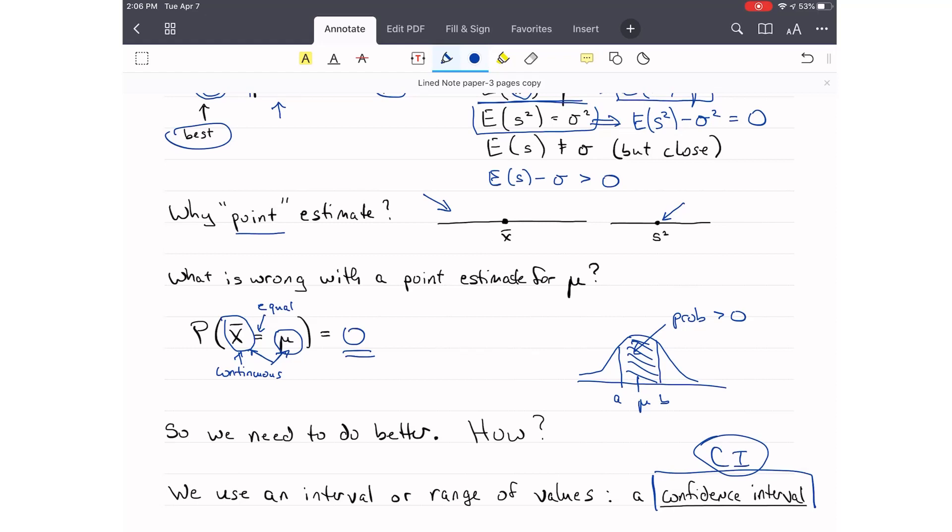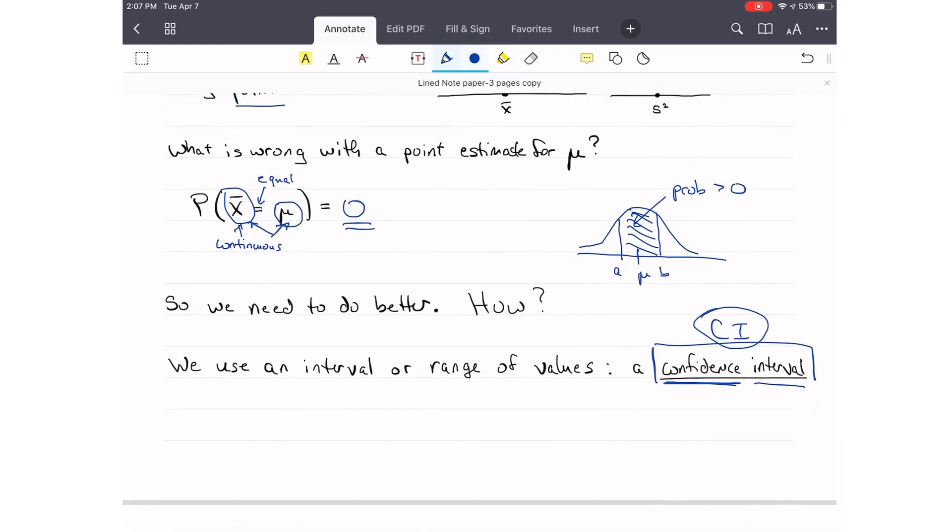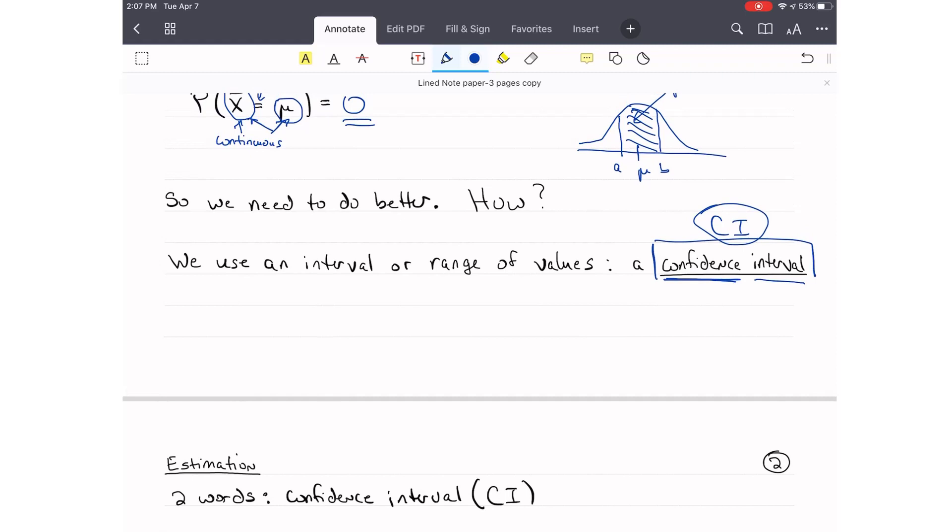So if we use this interval or range of values, this is what we call a confidence interval, and often we will abbreviate that as capital CI. Now, I find that students get confused about the terms because this has the word confidence in there, and it has the word interval.